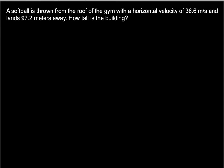A softball is thrown from the roof of the gym with a horizontal velocity of 36.6 meters per second and lands 97.2 meters away. How tall is the building?